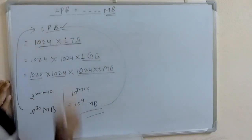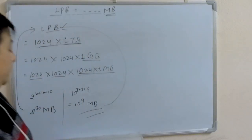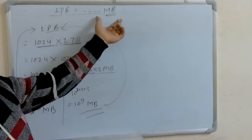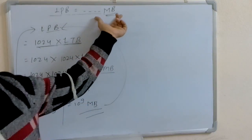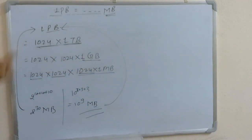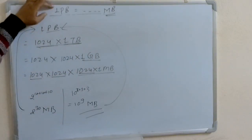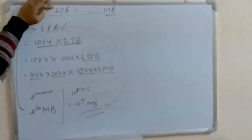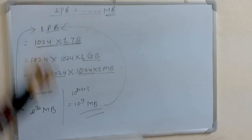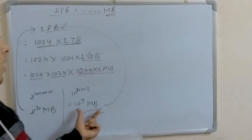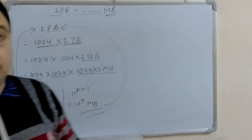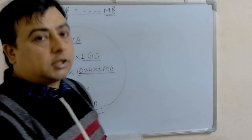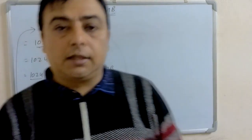In this question we have to break down only up to MB. That is why two power 30 MB is equal to one petabyte, and ten power 9 MB is equal to one petabyte. Thanks for watching the video.